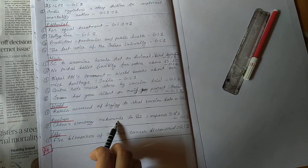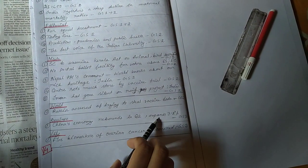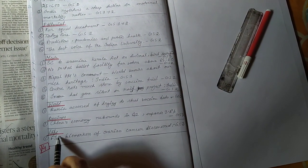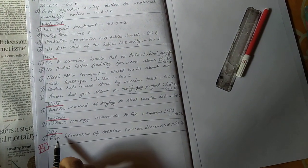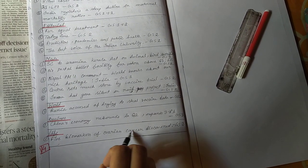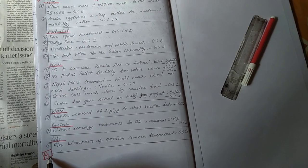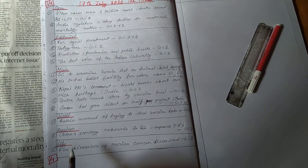Business, China's economy rebounds in quarter 2, expands 3.2%, GS paper 3 economy. Then the last page, 5 biomarkers of ovarian cancer discovered, GS paper 3. So today is total 14 topics which you have to cover from The Hindu 17th July.